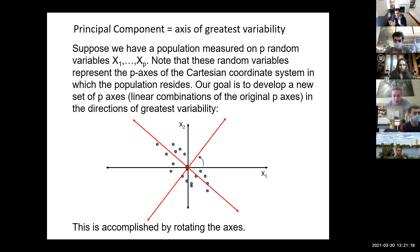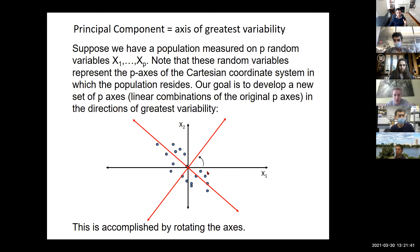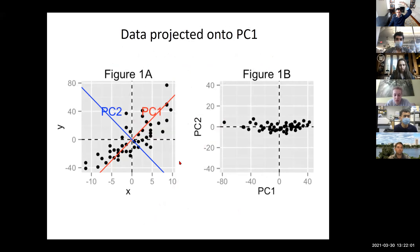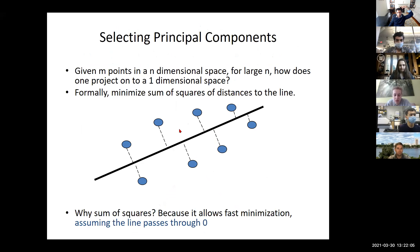If you have a population measured on a bunch of random variables, these variables represent the coordinate system within which the true population resides. You might be measuring the expression of two different genes, but the true underlying dimensionality is that those two genes are positively or negatively correlated — they both co-vary. That amount of co-variation is the lower dimensional embedding of interest, not the full space which is simply not explored by the dataset.